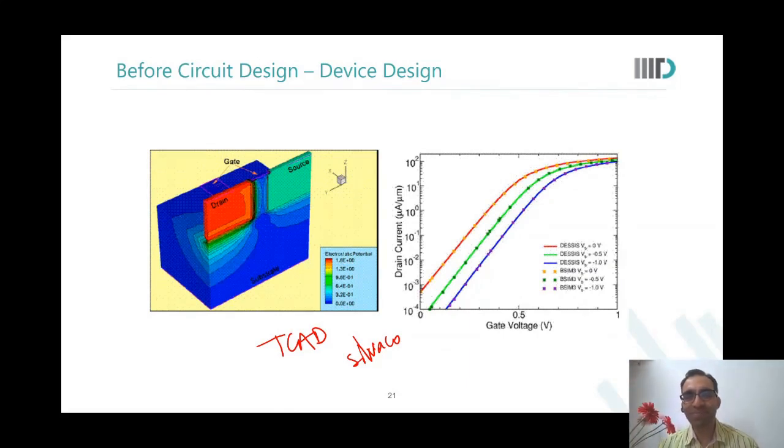Student asks: So in the process, do you mean that the 65 nanometer process or this 45? Professor: And so what we are making from this process, like the PMOS and all, that is the device level. Yes. Right.